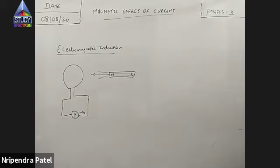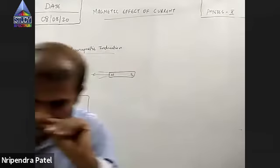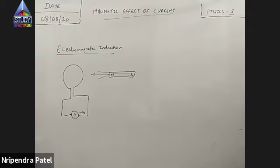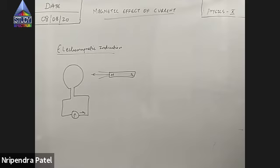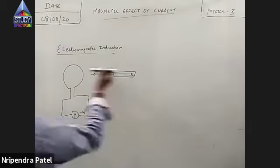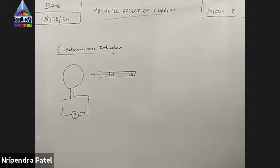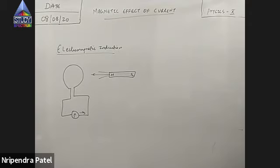If we took a loop, a coil, and the coil is connected to a galvanometer — which senses current and shows deflection when current passes — and took a north pole close to the coil, what Faraday noticed was that current flows in the coil. There is no source of current. Do you see a cell? No, sir.